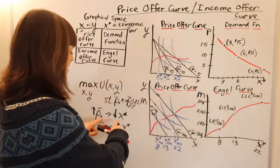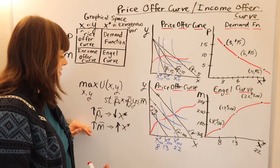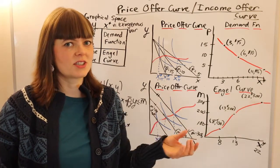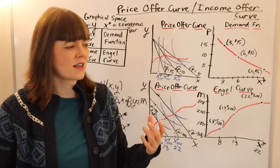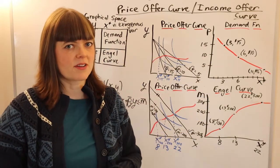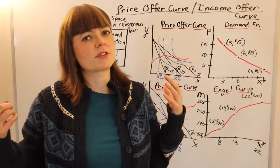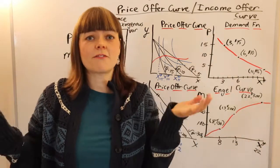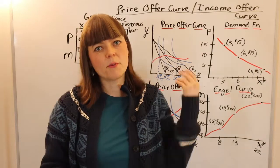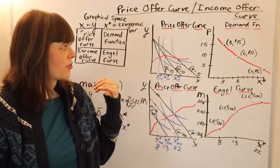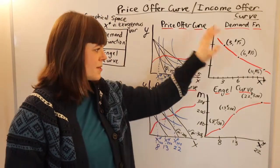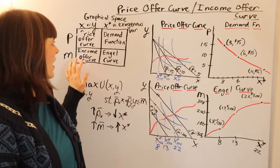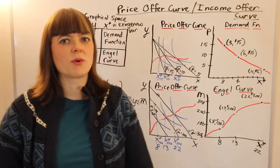These relationships are fairly intuitive, but in a lot of models the relationship between exogenous variables and optimal choice is not necessarily obvious — which is why going through comparative statics is really useful if you want to do thought experiments on counterfactual things, including counterfactuals on policy. I hope you've found this helpful when thinking through price offer curves, income offer curves, demand functions, and Engel curves, and how they all relate to each other and to the classic utility maximization model.